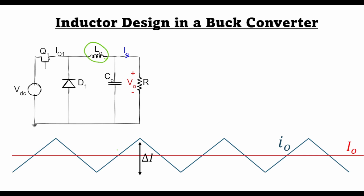Recalling from the lecture on basic waveforms in a buck converter, the output current has a triangular pattern. During the T-ON region the inductor current rises with the slope equal to VDC minus V0 divided by L, and during T-OFF the inductor current decays with the slope equal to V0 divided by L. We also saw that the condition for continuous current conduction is that the minimum output current I0 should be greater than the critical load current.